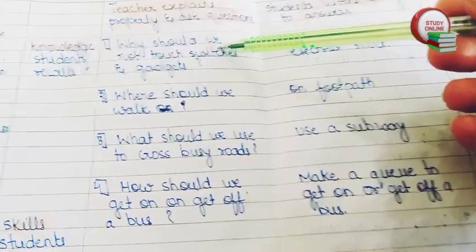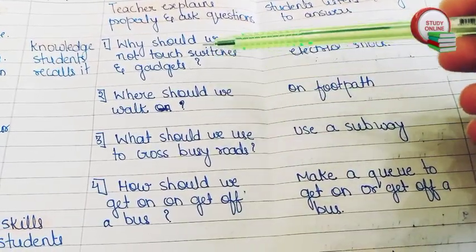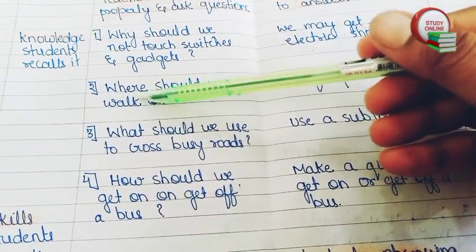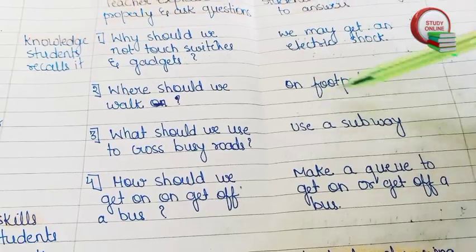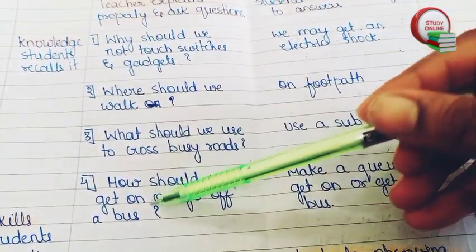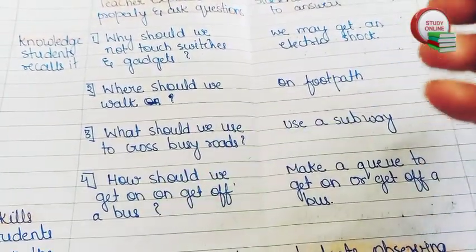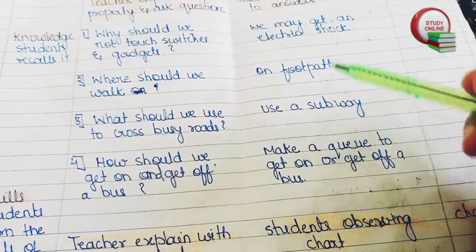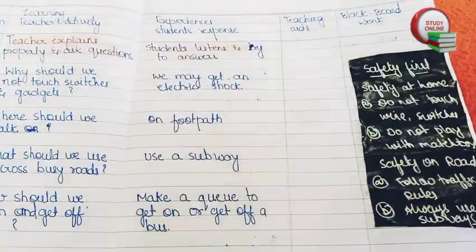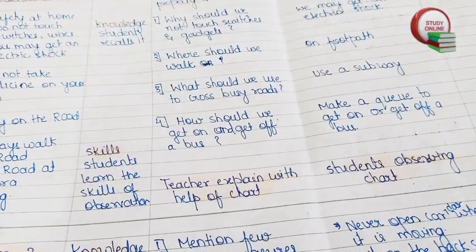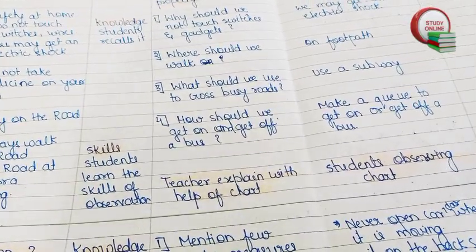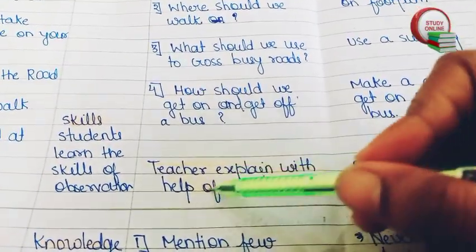After explaining properly, the teacher has to ask a few questions related to the topic. You can see four questions: 'Why should we not touch switches and gadgets?', 'Where should we walk?', 'What should we use to cross busy roads?', and 'How should we get on and get off a bus?' Here you can see the blackboard work. After that, the teacher has to once again explain using a teaching aid — a chart. Students observe the chart.